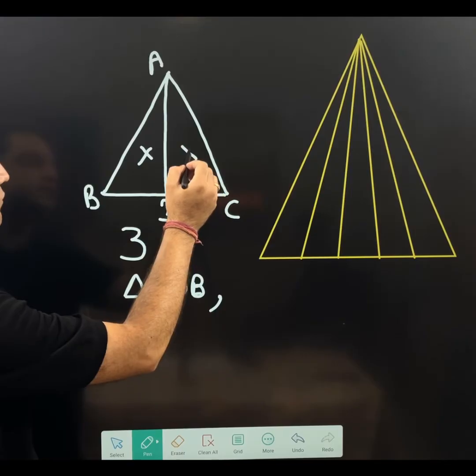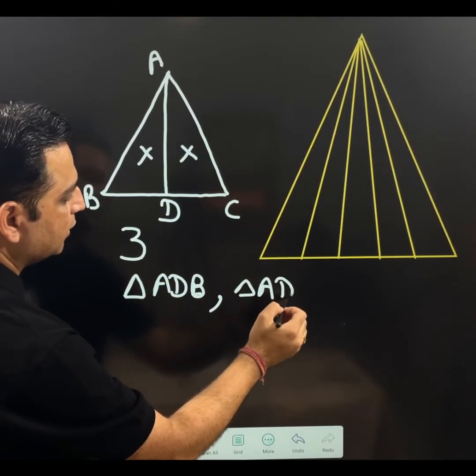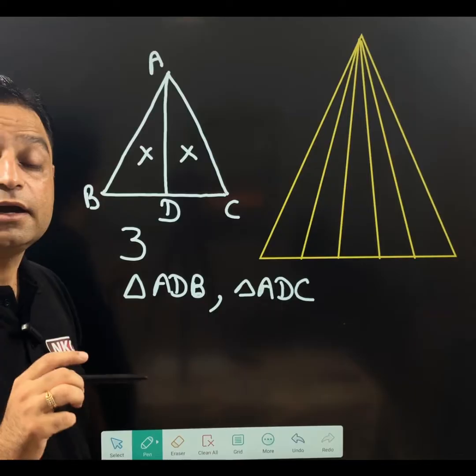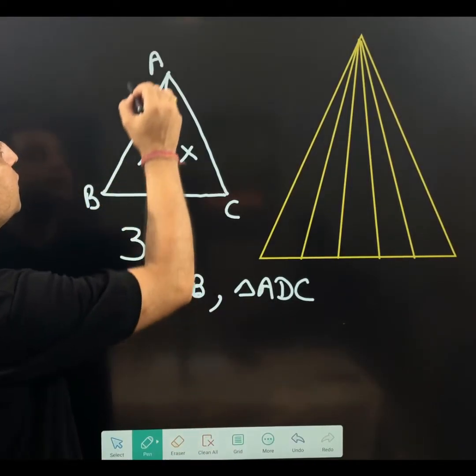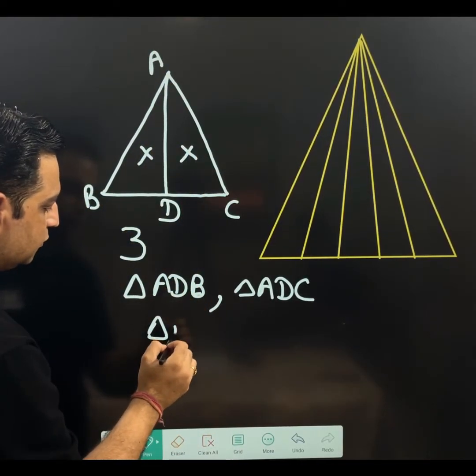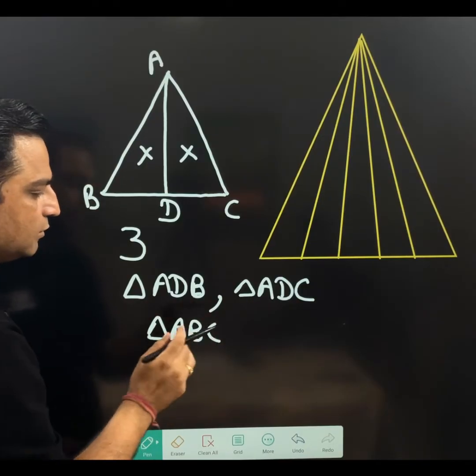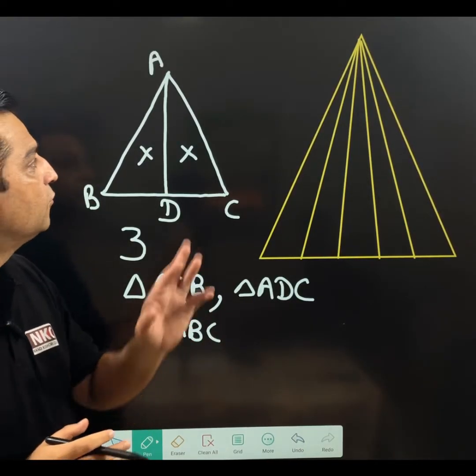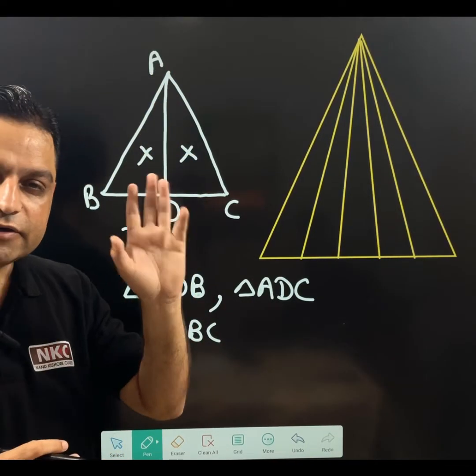Second triangle is this side, triangle A, D, C. And which one is third triangle? The bigger triangle, full triangle A, B, C. See, there are total three triangles. When one line is marked, three triangles are there.